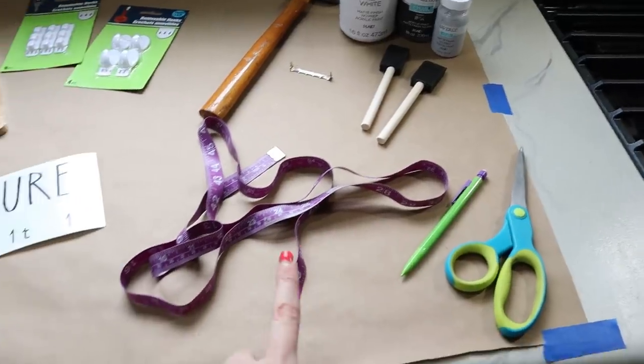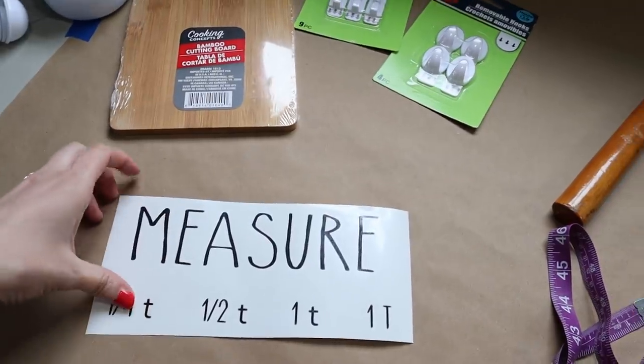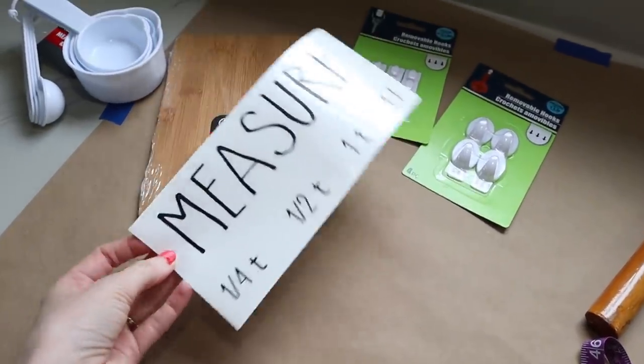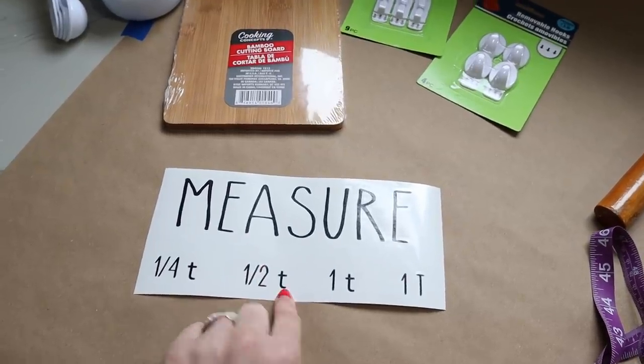I also have scissors, a pencil, measuring tape, and then this is the decal I'll be using for this. If you don't have a vinyl machine you could just use a Sharpie marker and write it on.